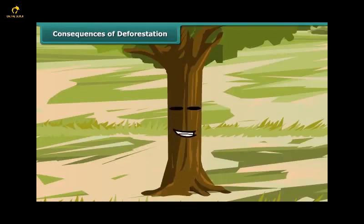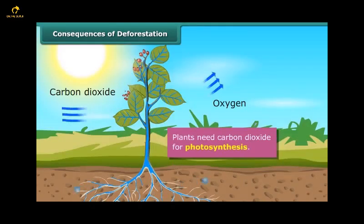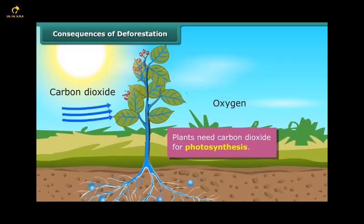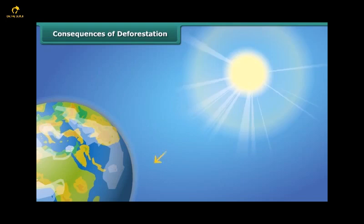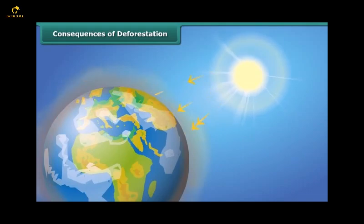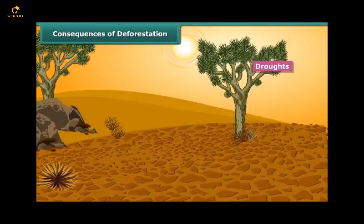You have already studied about deforestation and its various causes. Now let us discuss some of its consequences. Plants need carbon dioxide for photosynthesis. Fewer trees would mean less carbon dioxide would be used up, resulting in its increased amount in the atmosphere. This will lead to global warming, as carbon dioxide traps the heat rays reflected by the Earth, increasing temperature and disturbing the water cycle, which may reduce rainfall and cause droughts.